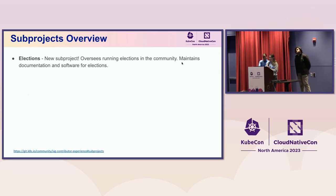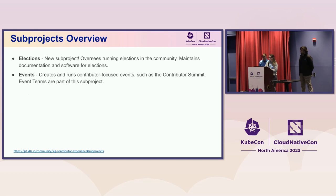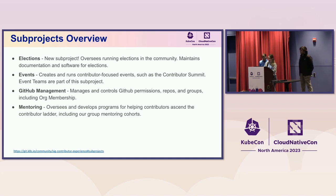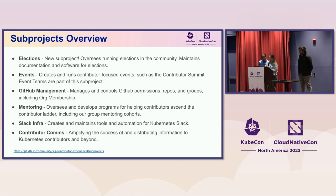We also have the election subproject, which is new and oversees running elections in the community. It also maintains documentation and software used for elections — it can be used beyond Kubernetes. We have events for contributor-focused events like the Contributor Summit. GitHub management does all kinds of things managing how Kubernetes works on GitHub — Kubernetes is huge, so that's a huge job. Mentoring helps new folks get involved. Slack infrastructure manages tools, automation, and moderation for the Kubernetes community on Slack. And contributor comms manages the Kubernetes contributors account on Mastodon, Twitter, and other communication channels such as blogs and emails.